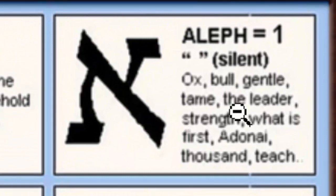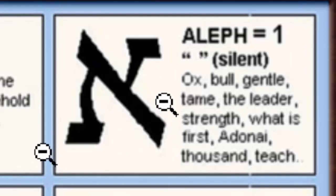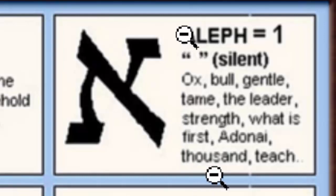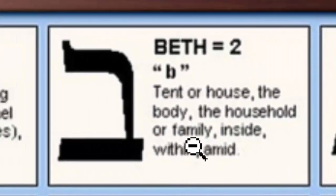Let's look closely at these Hebrew letters and see what they mean, because that's what will actually clear it up — we let the scripture define the scripture. The word has four letters. The first letter is Aleph. It means: ox, bull, gentle, tame, the leader, strength, what is first, Adonai, thousand, and teach. Each Hebrew letter has meaning, and they put those meanings together to determine what a word means — unlike English, where we're just combining vowel sounds. What you can pull out of this is that this month is the leader or the first.